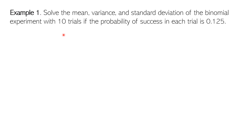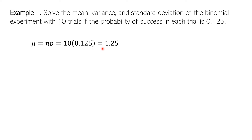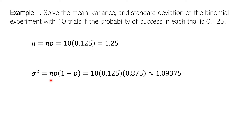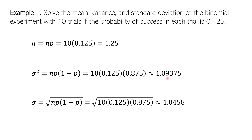Example: solve the mean, variance, and standard deviation of a binomial experiment with 10 trials, if the probability of success in each trial is 0.125. The mean is 10 times 0.125, which equals 1.25. The variance is 10 times 0.125 times (1 minus 0.125), which is 10 times 0.125 times 0.875, approximately 1.0937. The standard deviation is the square root of the variance, which is 1.0453.